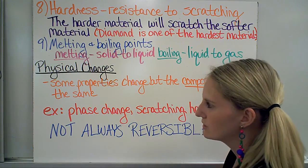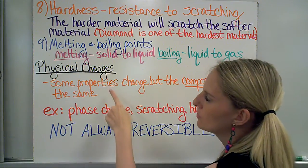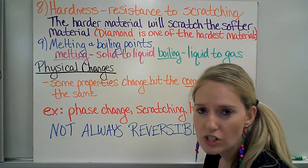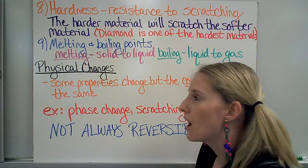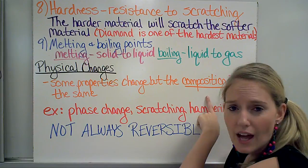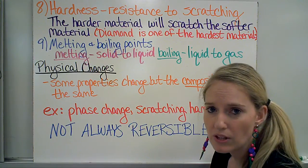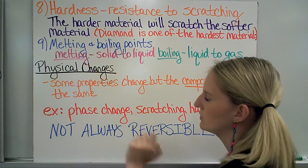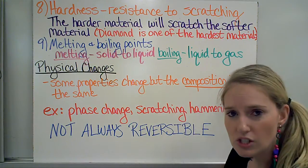For all of these physical properties, if I change one of those physical properties for a substance, I call that a physical change. The properties or characteristics might change, but the composition of that material is still the same. So I haven't changed what it's made of. If I have a phase change of solid water or ice becoming liquid water, it's still water, so the composition is still the same. If I scratch one of these materials like we were talking about with hardness, I haven't changed what that material is made of, so scratching an object would also be a physical change. Hammering an object, like we talked about for malleability, I'm changing its shape, but I'm not changing its composition or what it's made of.